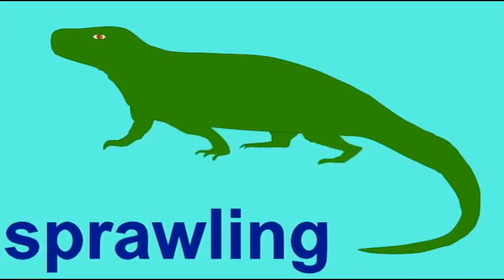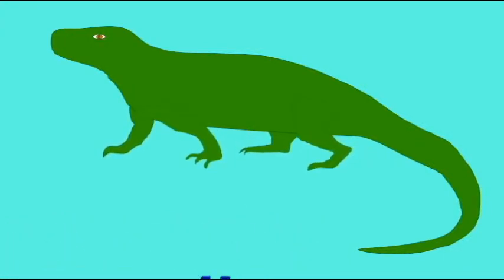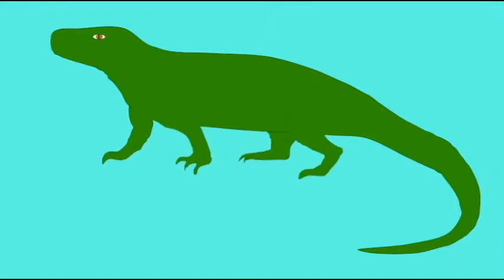Originally, the Triassic thecodonts had a sprawling body posture with their legs out to their side, dragging their bellies on the ground.